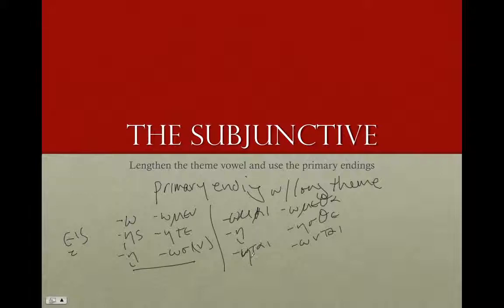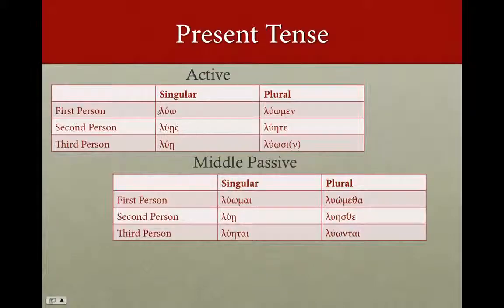We're just lengthening that theme vowel, but the endings are going to look very much like you're used to for the present tense, because these are primary endings. The only catch is going to be when we have some contractions, which are going to happen in mi-verbs and in your alpha, epsilon, and omicron contracts. But first, let's start with just the present tense. So, luo — we take our stem and just add the endings: luo, lues, lue, luomen, luete, luosin. And in the middle and passive: luomai, lue, luetai, luomatha, luese, luontai. You're going to see these endings in every single tense.